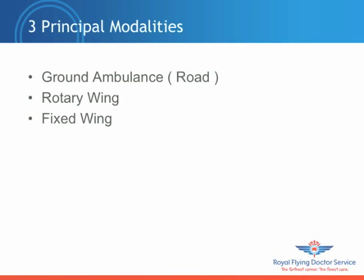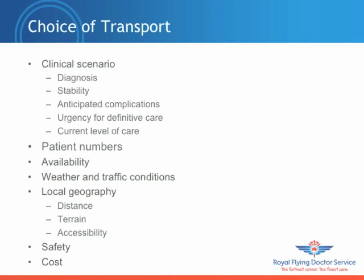There are three main modes of transport available to you as a retrieval clinician: ground ambulance, rotary wing, and fixed wing. Choice of transport is going to be dependent on a number of factors. The clinical scenario is going to be one of the most important, and the diagnosis and stability of your patient are clearly factors, but most importantly, the anticipated complications that might actually occur during the transport phase.